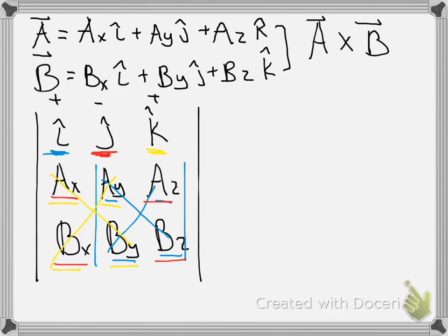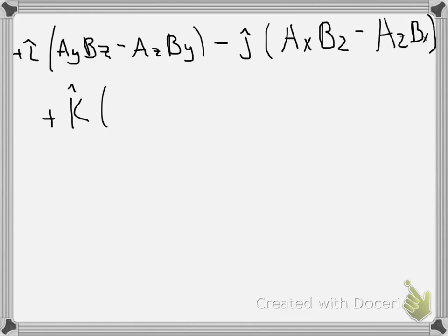So let's go see what that looks like, k times Ax By minus Ay Bx. And hopefully you can start to see a pattern developing here.